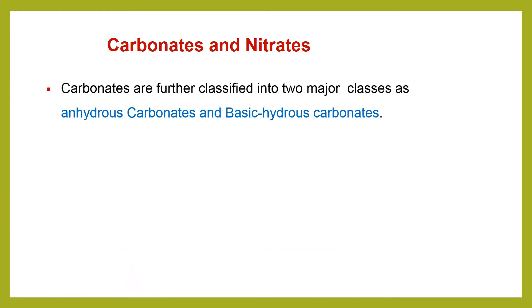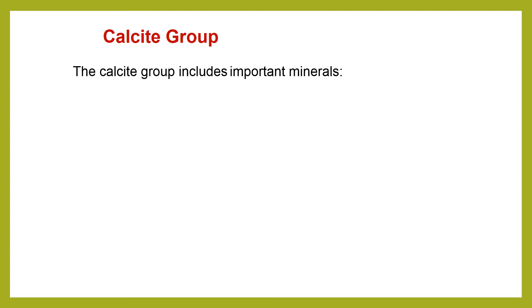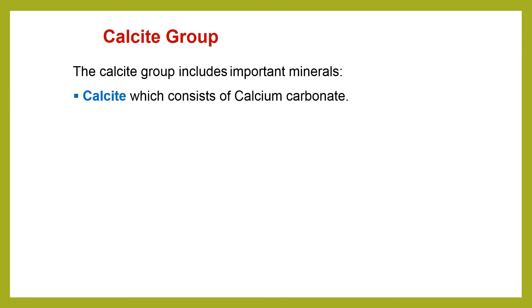Carbonates are also classified into two major classes: anhydrous carbonates and hydrous carbonates. The anhydrous carbonates include two groups — we call them the calcite group and the aragonite group. Talking about the calcite group, it includes very important minerals such as calcite, which consists of calcium carbonate. We have studied calcite before when we covered the physical properties of minerals.